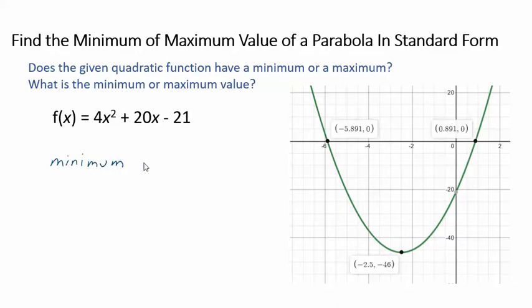is the y value. The minimum value is negative 46. Okay, it's not the vertex. It's not the x value of the vertex. It is the y value of the vertex. We're really talking about minimum output.